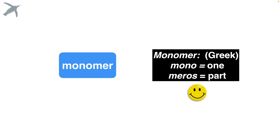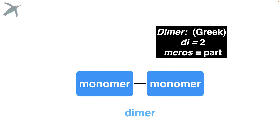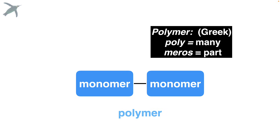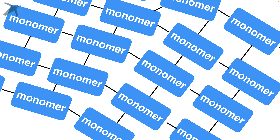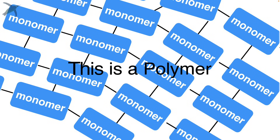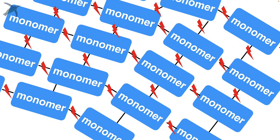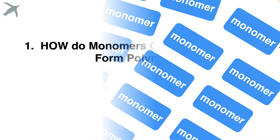The word monomer — mono just means one. If you take two monomers and join them together, you make a dimer. Di of course means two. We're going to use dimers to symbolize a polymer — poly means many. Real polymers look more like this, and as you can see they're very complicated. If you break all of those bonds, you release those monomers again.